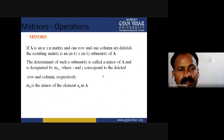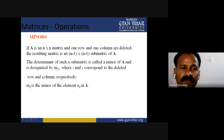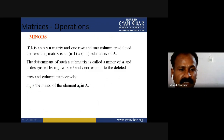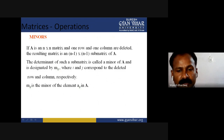If A is any n by n matrix and one row and one column are deleted, the resulting matrix is an n minus one by n minus one sub matrix of A. The determinant of such sub matrix is called a minor of A, designated by M_ij where i and j correspond to the deleted row and column respectively. So M_ij is the minor of the element A_ij in A. Minor is basically the determinant for any particular element in any matrix.